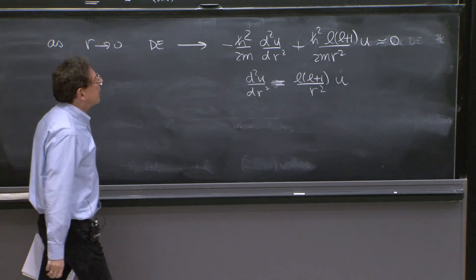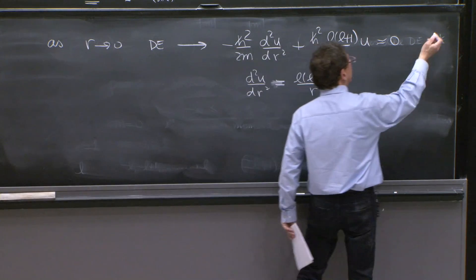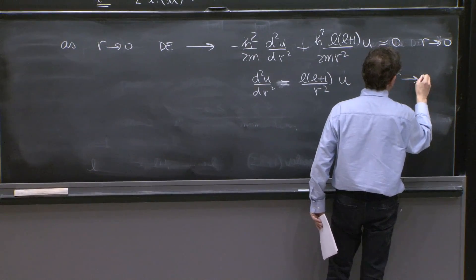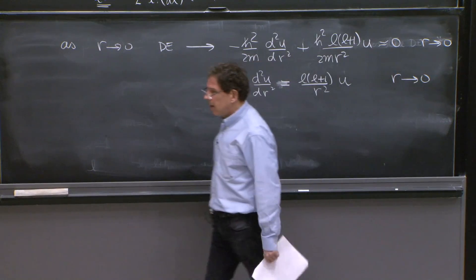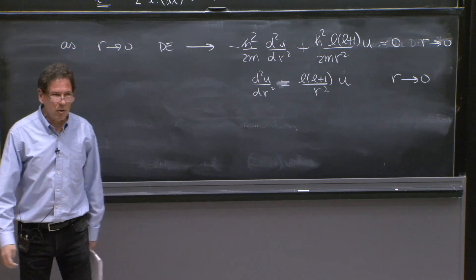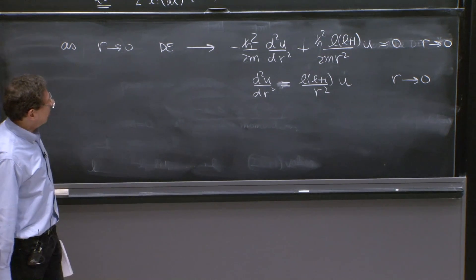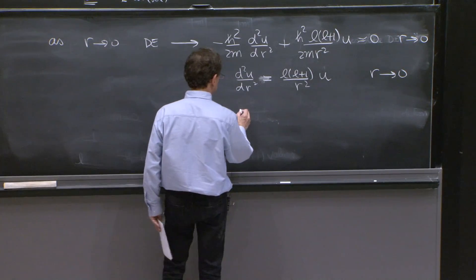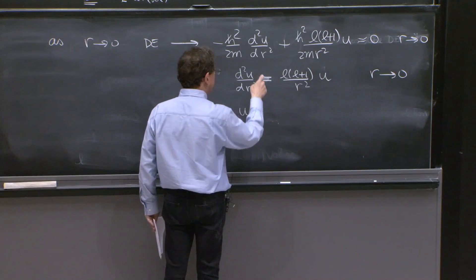And we're only interested for this as r goes to 0. And it's not an exact statement. It's a discovery. We're trying to discover what's happening with the wave function near r equals 0. Well, this has two kinds of solutions. You can try a polynomial.